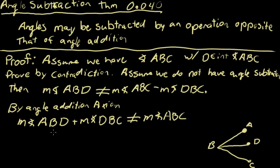So let's look at these angles. We have ABD is this angle right here, DBC is this bottom one, and we're saying that's not equal to ABC. But this is a contradiction. This contradicts the angle addition axiom.